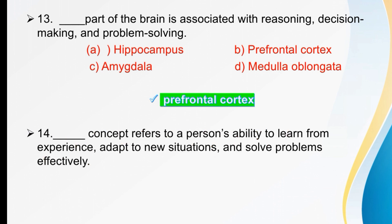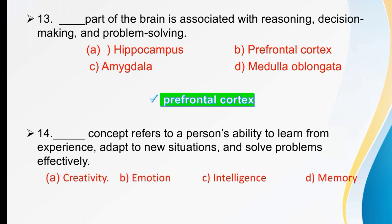Dash concept refers to a person's ability to learn from experience, adapt to new situations, and solve problems effectively. Options are creativity, emotional intelligence, intelligence, or memory. The concept that refers to a person's ability to learn from experience and adapt to new situations is known as intelligence. The right option is C.